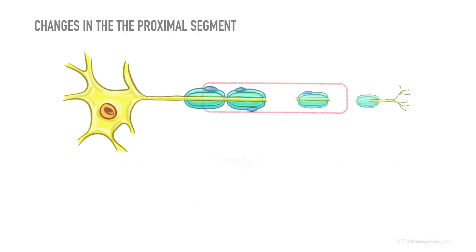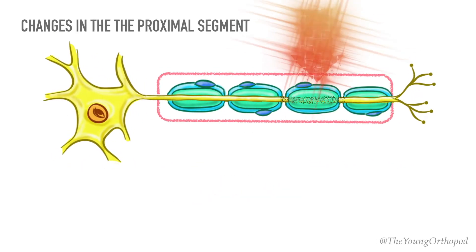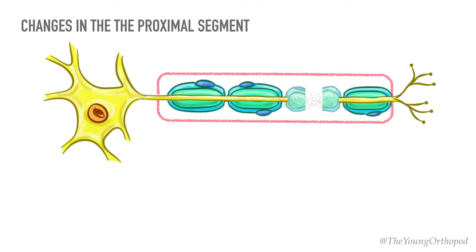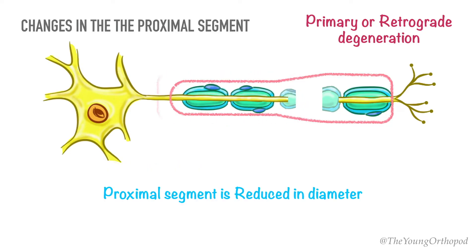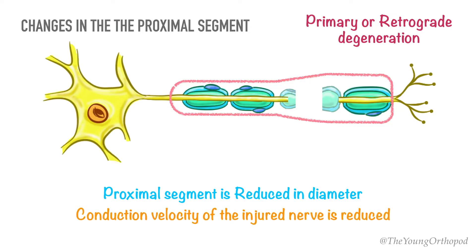The reaction proximal to the point of detachment is called primary or retrograde degeneration. The proximal segment is generally reduced in diameter due to loss of functional connectivity to the end organ muscle and the unsheathing Schwann cells. Consequently, the conduction velocity of the injured nerve is reduced.